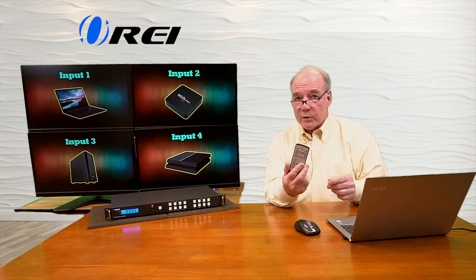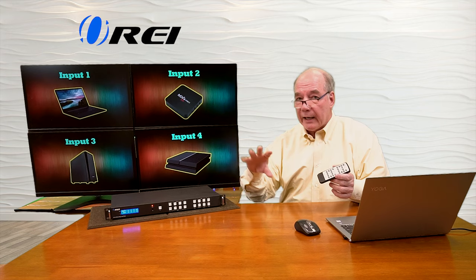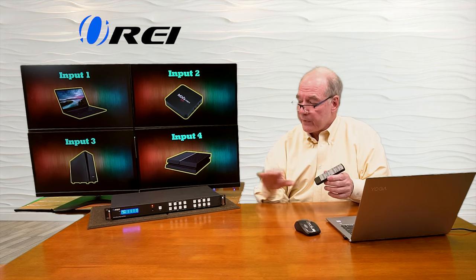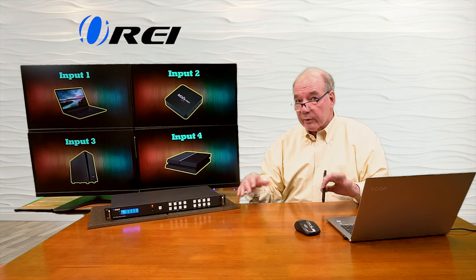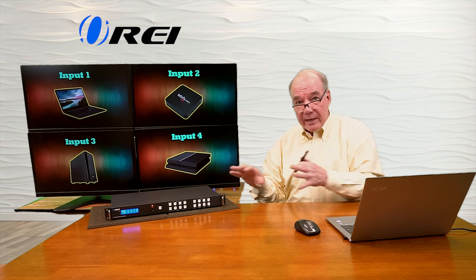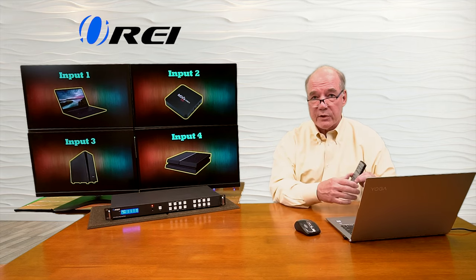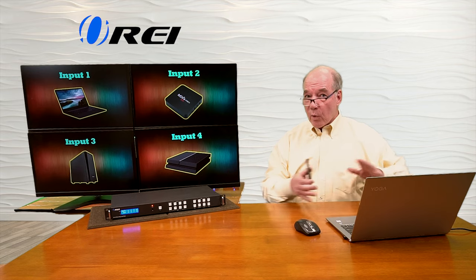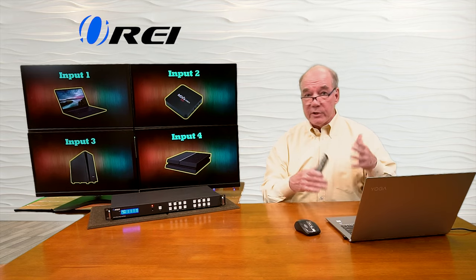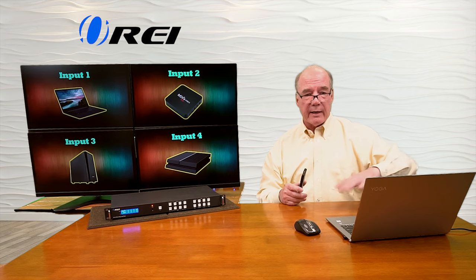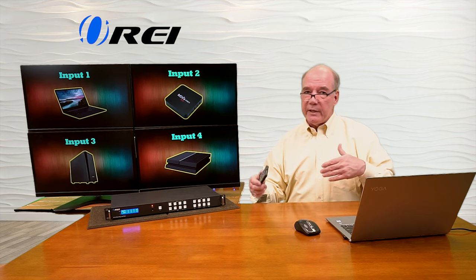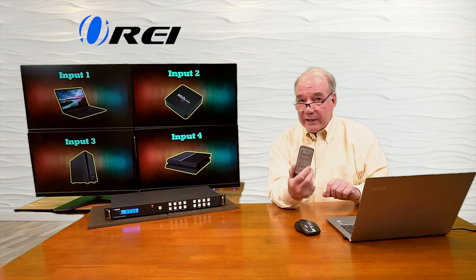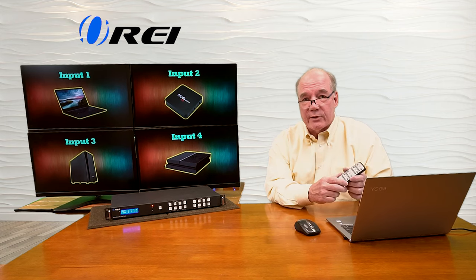For example, the remote control is the quickest way to select one of the inputs and send it to an output, but it doesn't provide a lot of advanced functionality beyond that. The buttons on the front of the unit give you a deeper level of programming and configuration. And if you move to the software, you get a lot more advanced functionality — like sending one input to all four monitors simultaneously, stitching them into a gigantic video wall, or setting up different input-to-output rotation schedules based on timing. So the software is the most sophisticated way to go, but if you're looking for an easy way, the remote is really the answer.